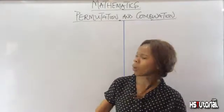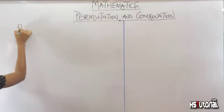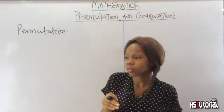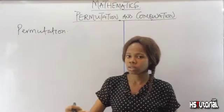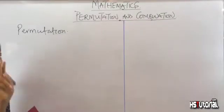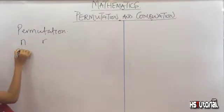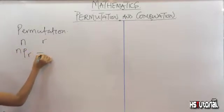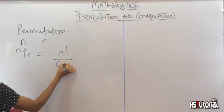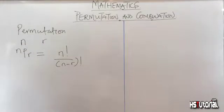Now what is the mathematical formula for permutation? Our formula involves two basic elements: n and r. n permutation r is given by n factorial all over n minus r factorial.